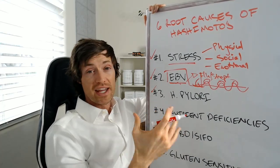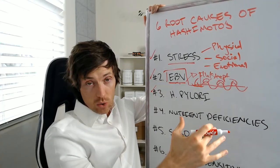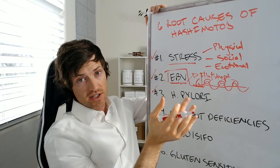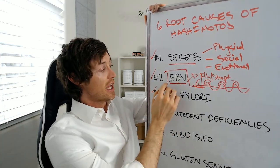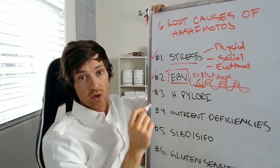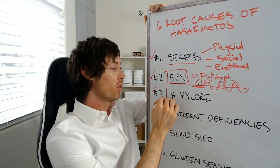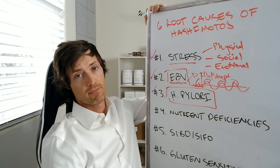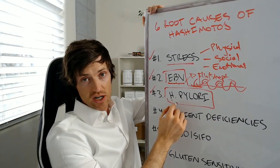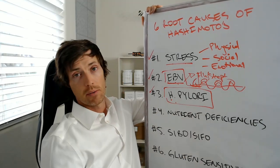Number three would be an infection caused by H. pylori. So we talked about stress being a potential cause and everyone sort of understands stress. EBV is a viral infection. So infections can cause Hashimoto's thyroiditis. Now this one, H. pylori is a bacterial infection. Now the bacteria implicated in causing Hashimoto's in this case is Helicobacter pylori.